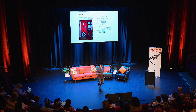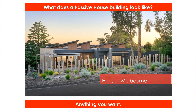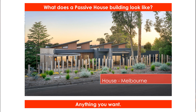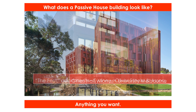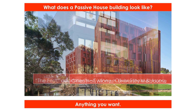So what does a Passive House building look like? The answer is anything you want. Passive House is not just about houses — it comes from the German term where 'house' means 'building'. As you can see from these photos there are commercial buildings, offices, multi-residential buildings, schools, a car dealership including its workshops in Canada, and shopping centres.